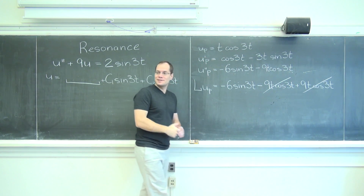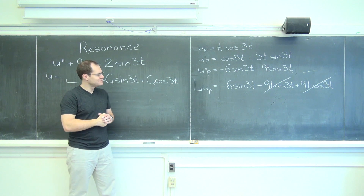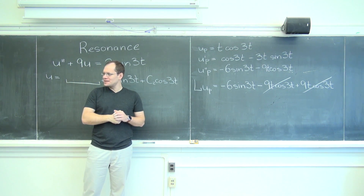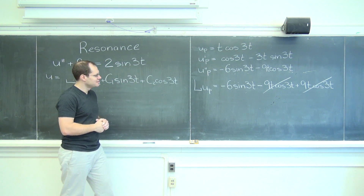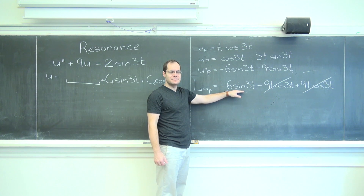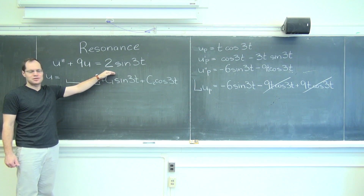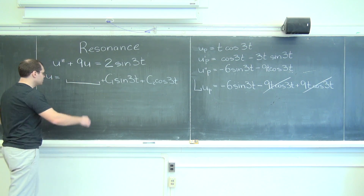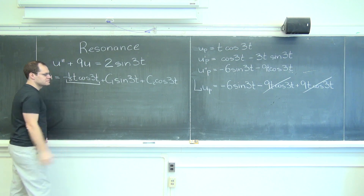Previously I would underline matching terms, but now I cross them out — for emphasis. So we get minus 6 sine 3t, and we were aiming for 2 sine 3t. So the coefficient is negative one third.